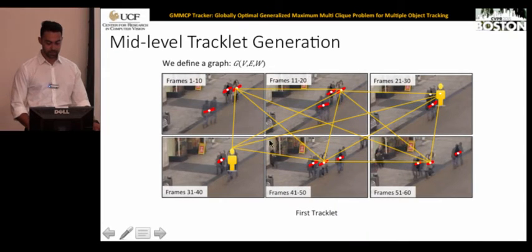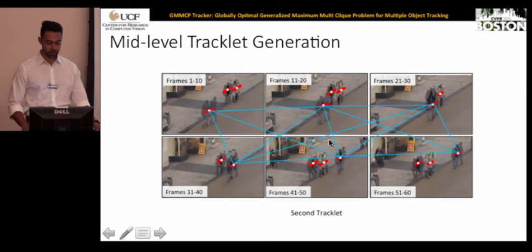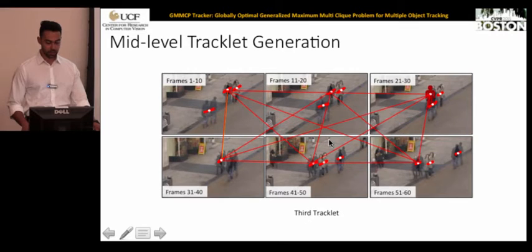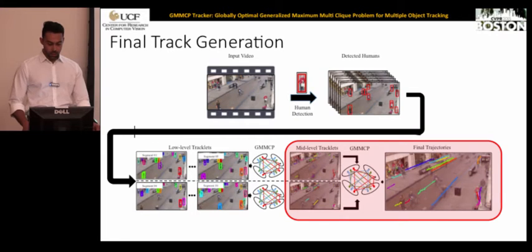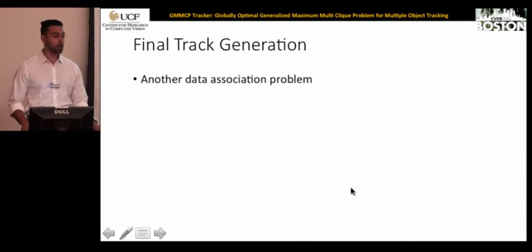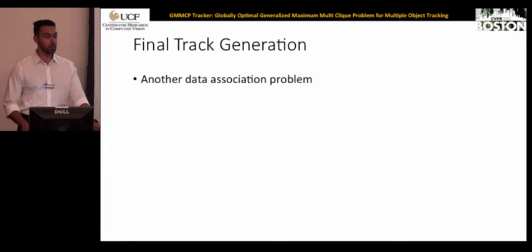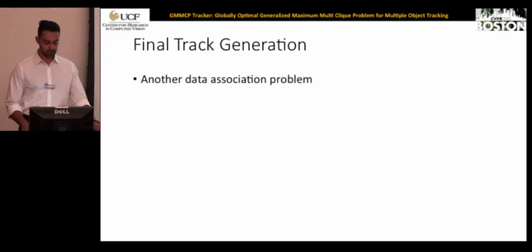As shown in these separate examples, for one track we were missing two detections and two dummy nodes were placed in the right location. All tracks are found simultaneously. To find the final trajectories, the same data association problem is solved again, with the only difference being that the nodes are now mid-level tracklets instead of low-level tracklets.